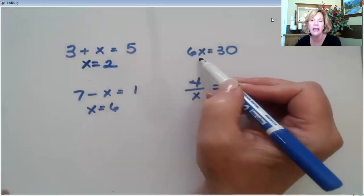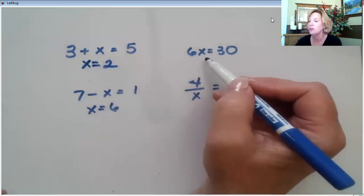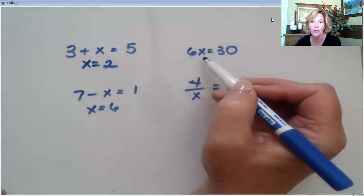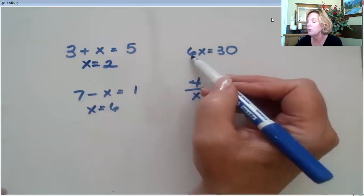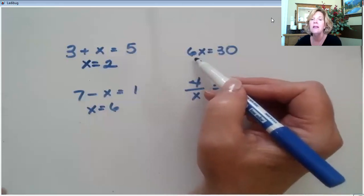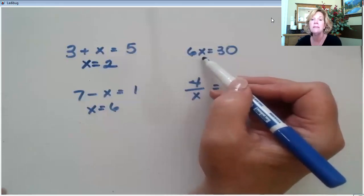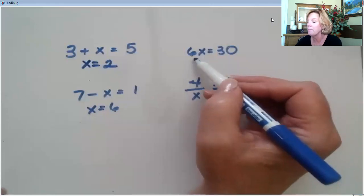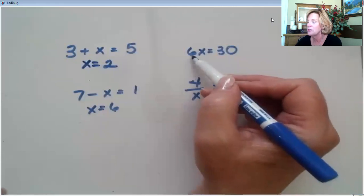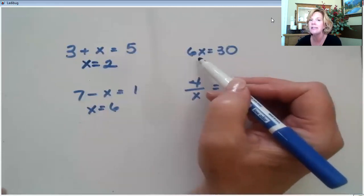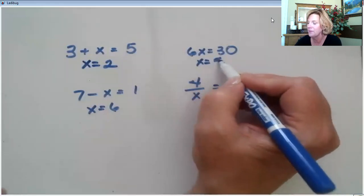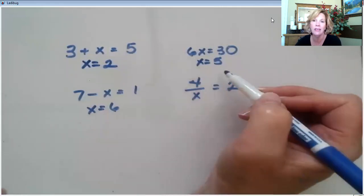Here we have a multiplication equation. Do you see the multiplication sign? No, but we know that when we put a number up against a letter or a letter up against another letter, then the operation is multiplication. We are multiplying 6 times the value of x. So, 6 times x equals 30. X has got to be equal to 5 because 6 times 5 is 30.